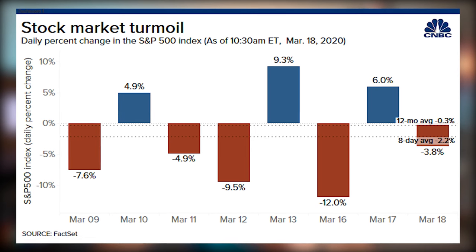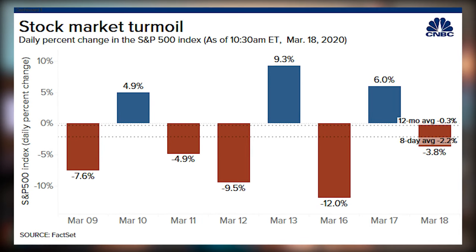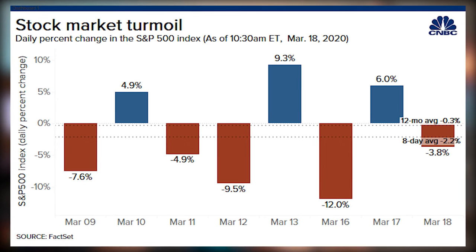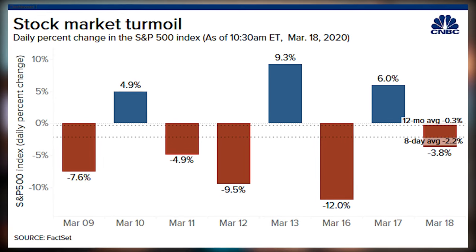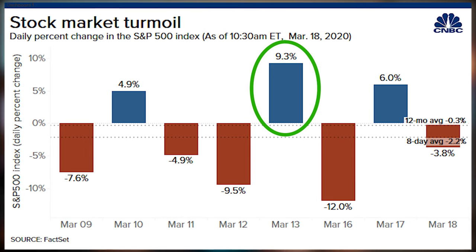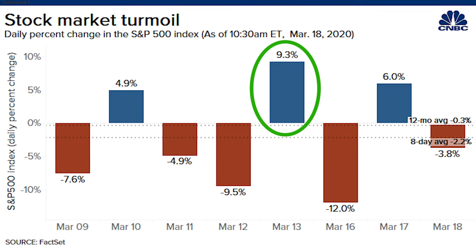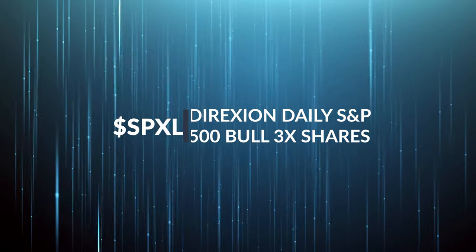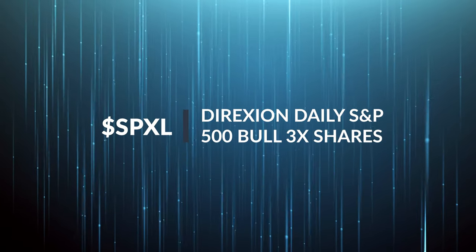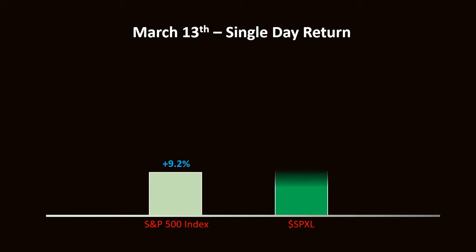This is something that CNBC published a little while back that showed the daily swings of the S&P 500 during the early stages of the COVID pandemic. If you look at Friday, March 13th, on that day, we saw the single largest daily gain in the S&P 500 since October of 2008. That day, the S&P 500 gained 9.2%. But if you had been holding this triple leveraged ETF, the Direxion Daily S&P 500 Bull 3x Shares ETF, ticker symbol SPXL, then on March 13th, you would have seen a gain of 26.9%. If you had $10,000 invested in that ETF, your return on that single day would have been $2,690.